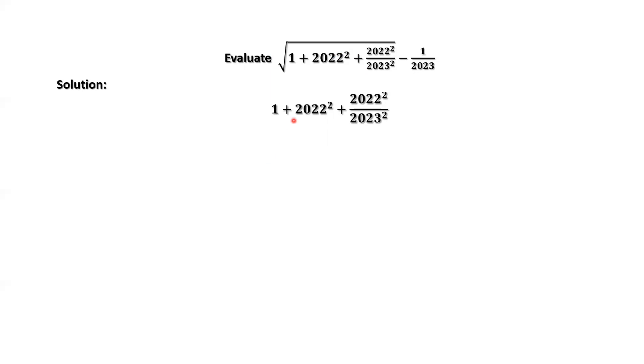For example, the first two terms, 1 plus 2022 square. If we make a square, originally we don't have the cross term 2AB. That means we have to minus 2 times 2022.